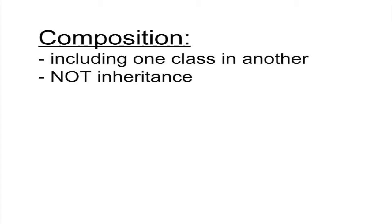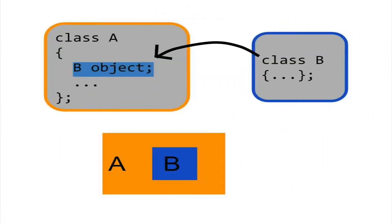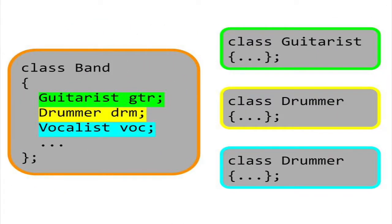Composition is the process of making one class a data member of another class. In a way, one class is embedded in the functionality of another. For example, you could have a class called band. The data members of band could consist of objects from the guitarist class, drummer class, and vocalist class.